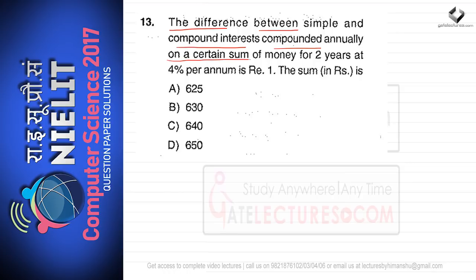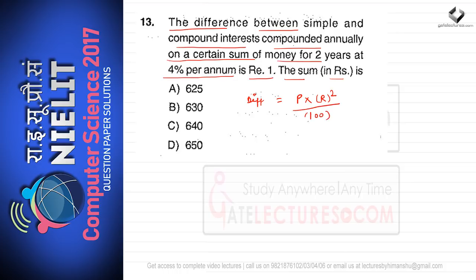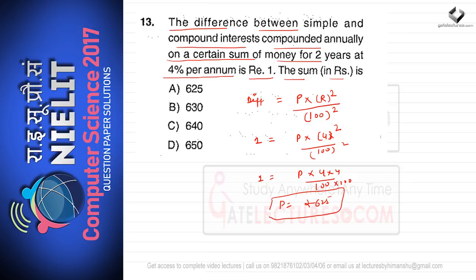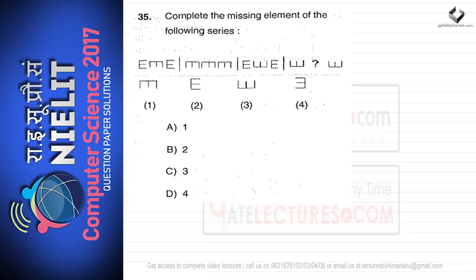The next question: the difference between simple interest and compound interest compounded annually on a certain sum for two years at 4% per annum is rupee 1. Using the direct formula, difference = P × r² / 100² = 1. So P × 16 / 10000 = 1, giving P = rupees 625. Option A is the correct option.